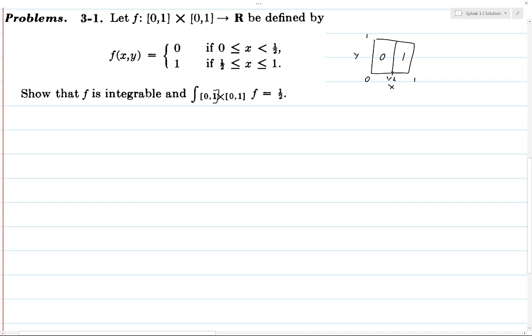For the right rectangle we see the base is one half, height is one, so the area of the rectangle is one half. The function takes on the value one, so the integral over that region should be one half times one, which is one half. You add those together and get one half, and that should be the integral of the function.